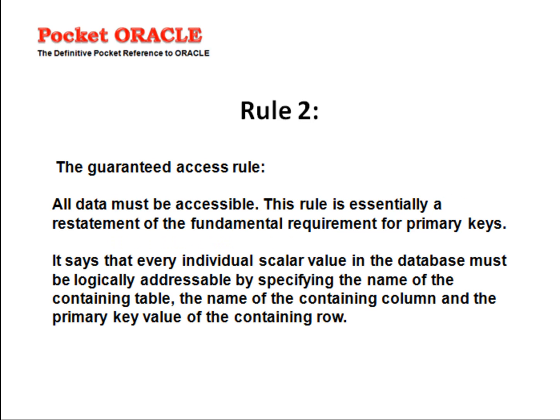Rule 2: The Guaranteed Access Rule. All data must be accessible. This rule is essentially a restatement of the fundamental requirement for primary keys. It says that every individual scalar value in the database must be logically addressable by specifying the name of the containing table, the name of the containing column, and the primary key value of the containing row.